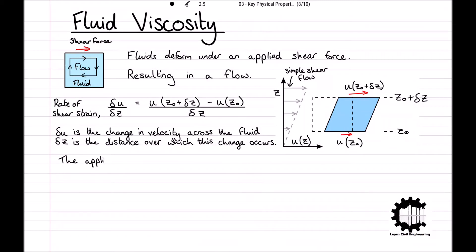In most common fluids, the applied shear stress tau is proportional to the rate of shear strain, delta u over delta z. The constant of proportionality is known as the dynamic viscosity of the fluid, which we denote by mu. This equation then becomes tau equals mu times by du over dz.